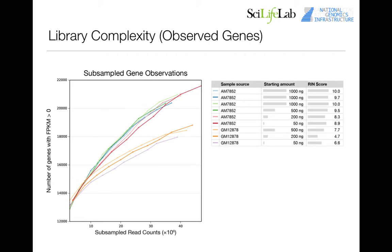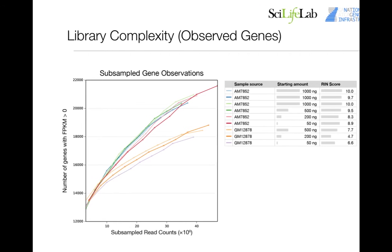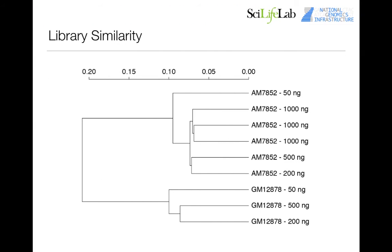Talking about unique molecules isn't necessarily biologically intuitive, so we also tested this in terms of number of genes observed. This is essentially the same plot but now looking at the number of genes with an FPKM greater than 1 — normalized for read count — across subsamples along the x-axis. Again, you can see that the RIN value has a stronger effect on how many genes we see than the amount of input material, and the profiles are all pretty much falling on top of each other.